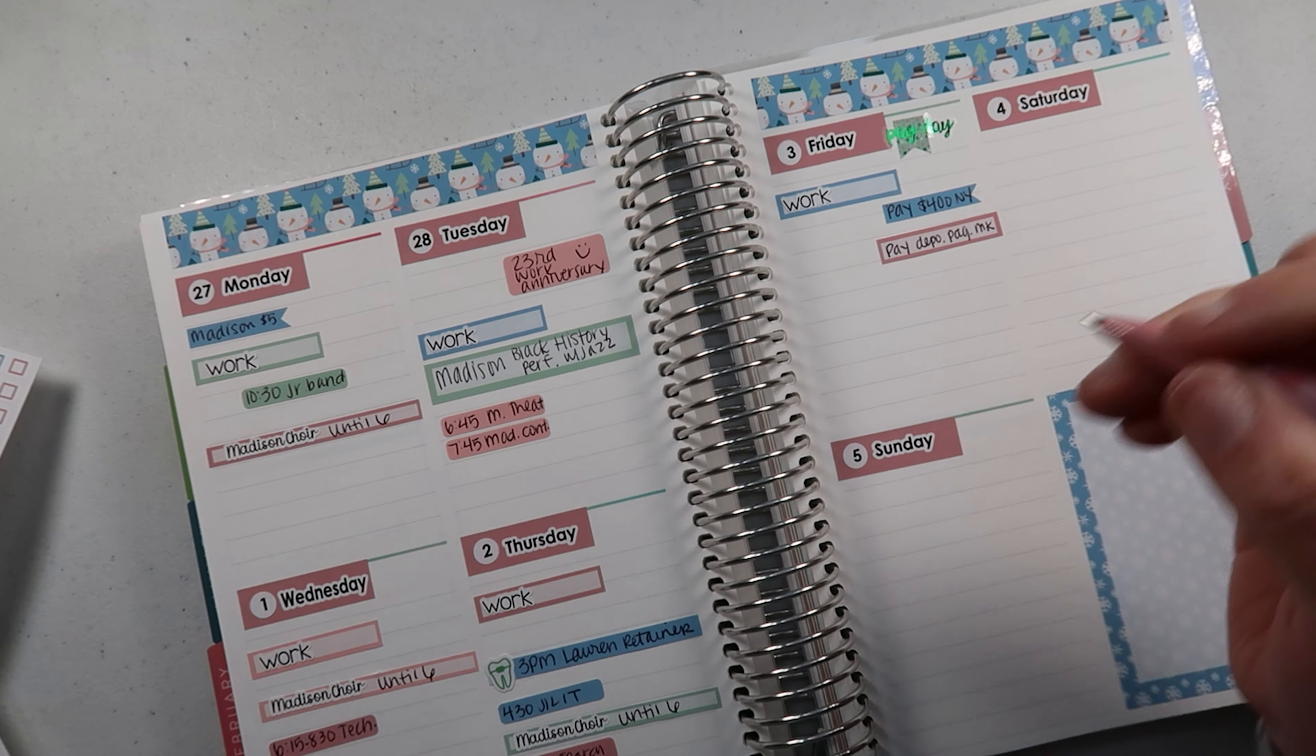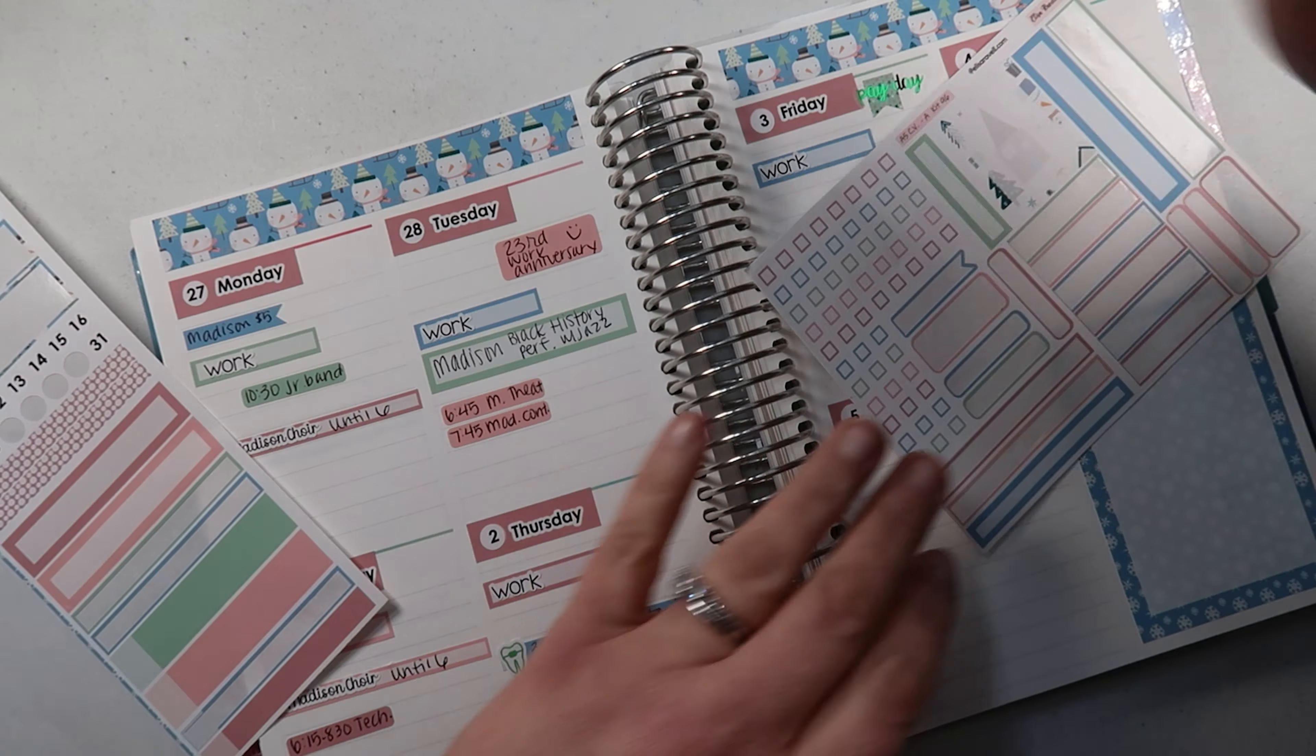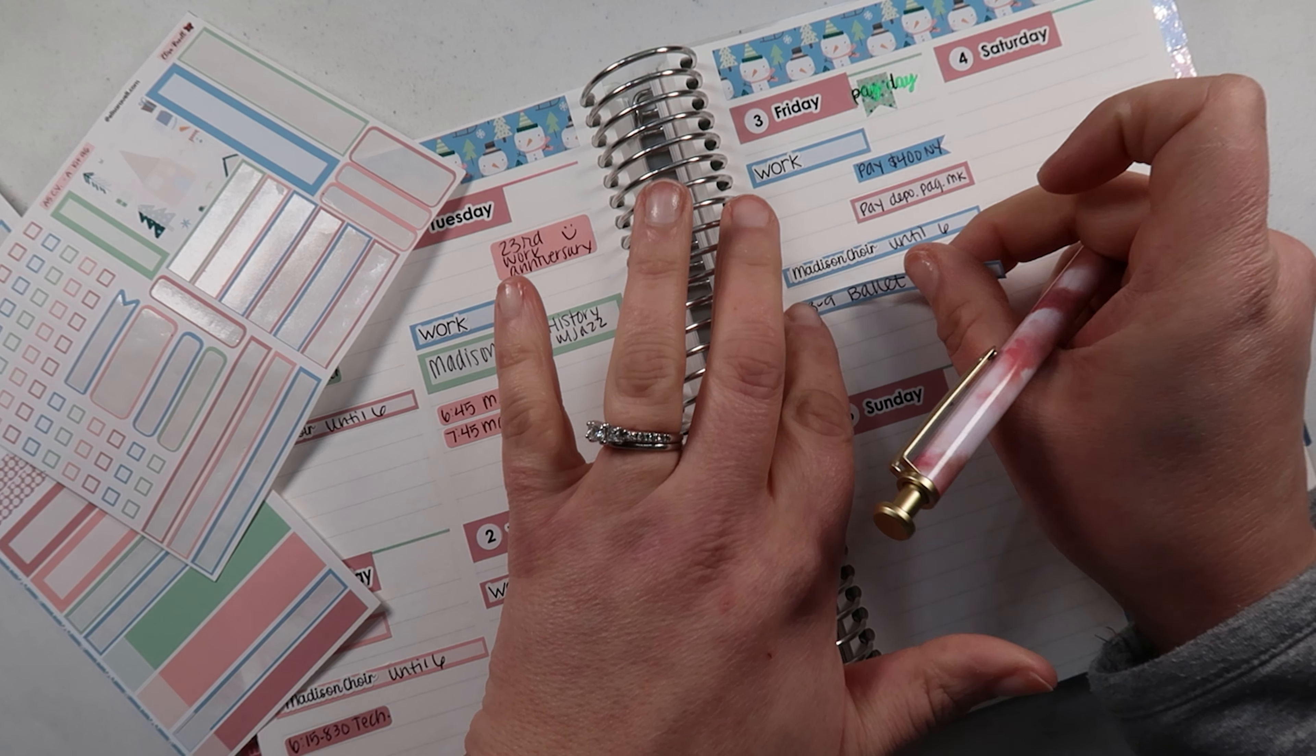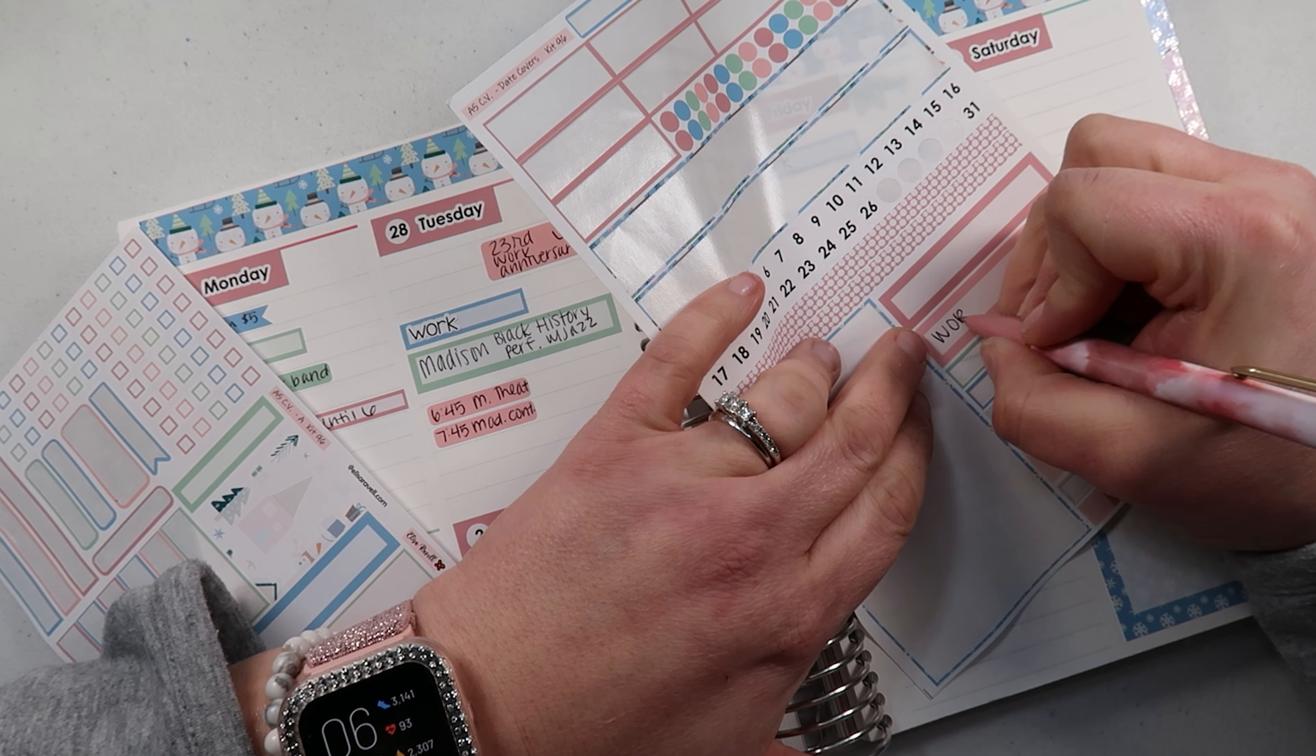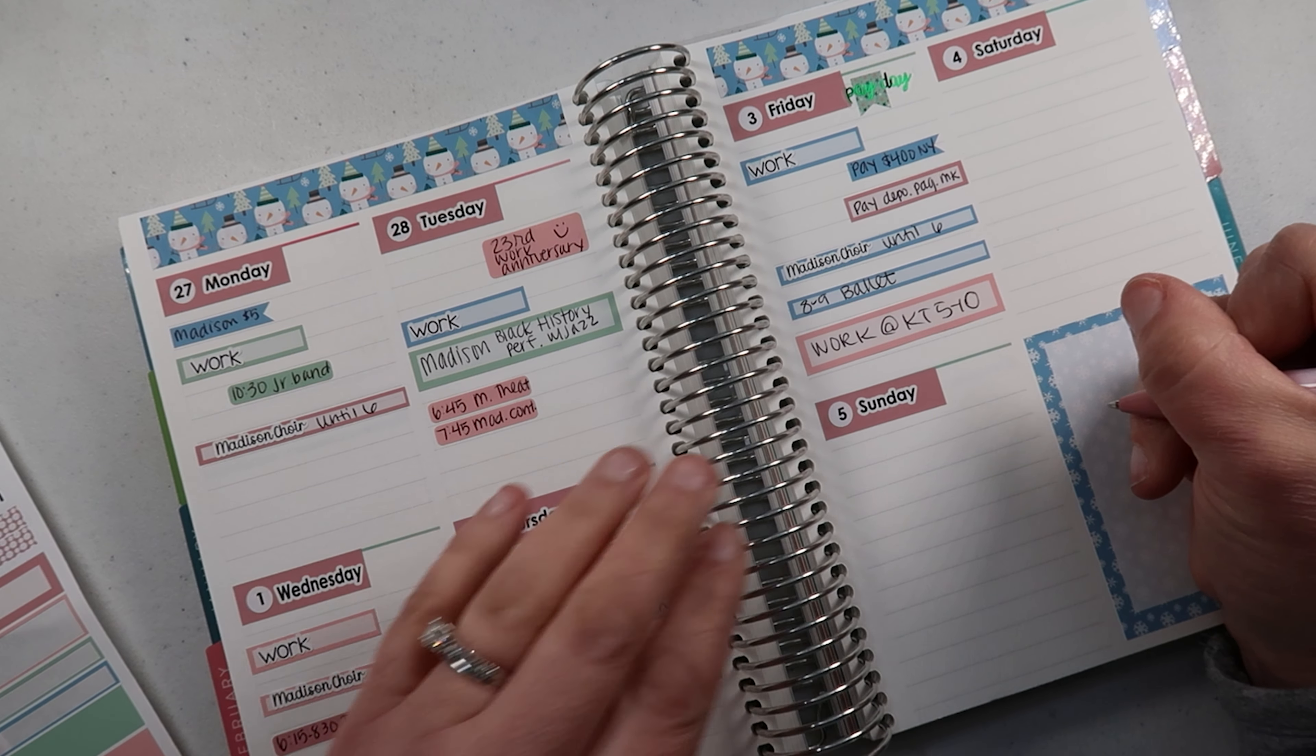All right, and then Madison has choir. There we go. And then they have ballet. I guess let's put ballet on this little guy. That's from eight to nine. There we go. And then, oh, I have to work this day, so I guess let's put this knot on the blue one. So I have to work at KT from five to ten. So hubby will have to bring the girls to ballet. There we go. And that's everything for that day.